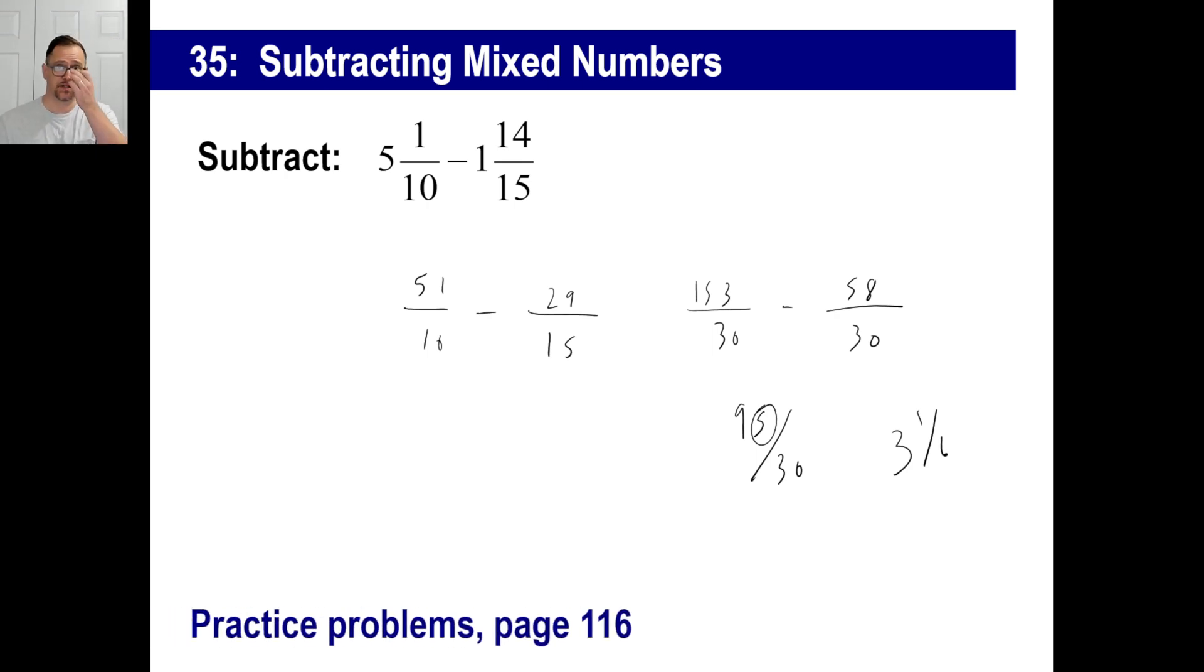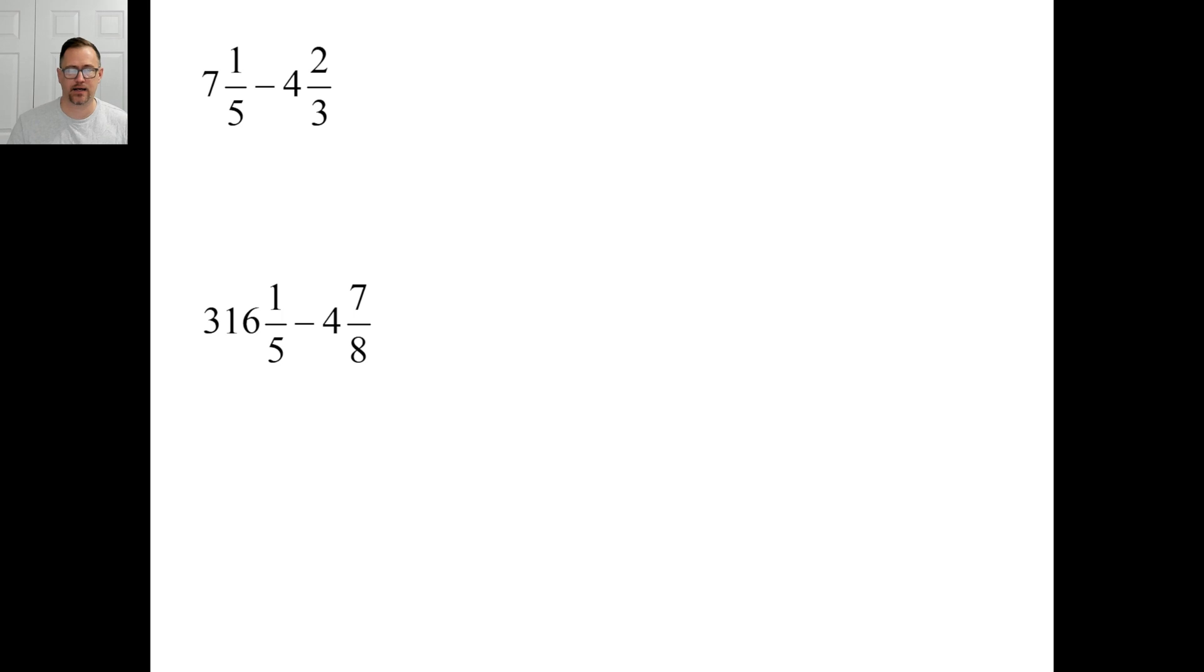Go to page 116 and work on A and come back and unpause it when you're finished with A. Okay. Same thing here. You could do either one of two ways. You know what? I'm just going to do this, I'm going to make this into an improper fraction way because I sure as heck don't want to do it for that one. So five times seven is thirty-five plus one is thirty-six fifths. Minus three times four is twelve plus two is fourteen thirds.